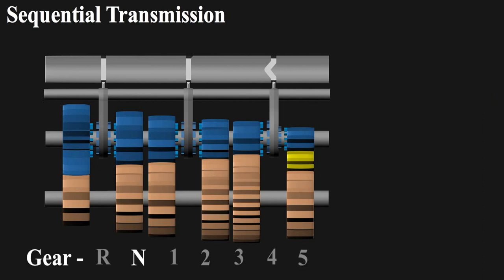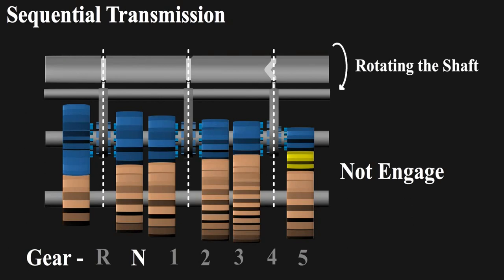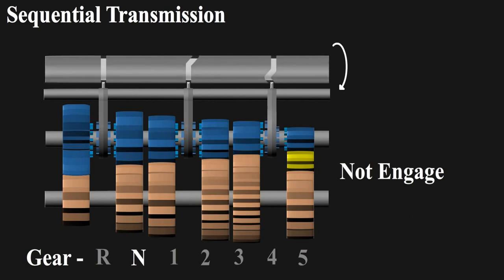In neutral, all the forks are perfectly in center and not engaging any of the gears. The gear engagement is done by rotating the shaft at a certain angle. As the shaft rotates, the groove position engaging this one pin shifts to one side. This pushes the pin aside, sliding the fork. This engages the first gear.